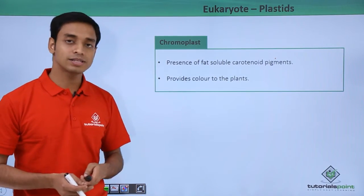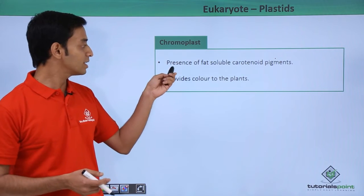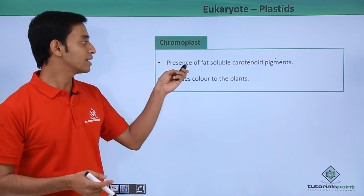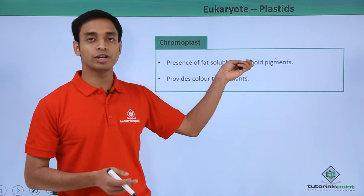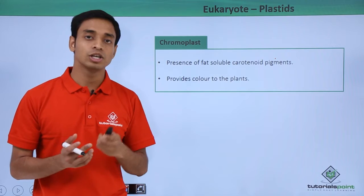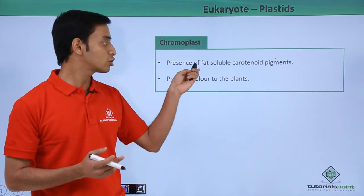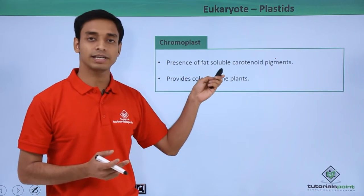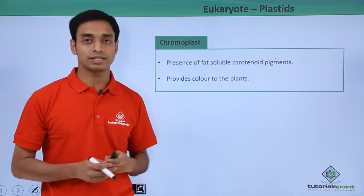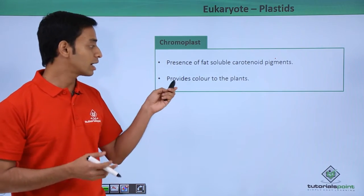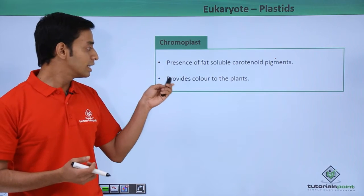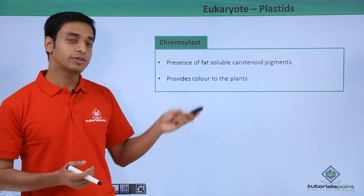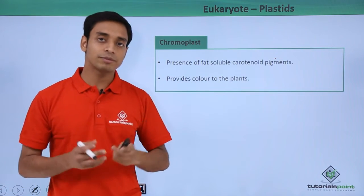The next type is the chromoplast. Chromoplasts contain fat-soluble carotenoid pigments — for example, xanthophylls. These are fat-soluble pigment-containing plastids present in plant cells, and they provide different types of color to plants.